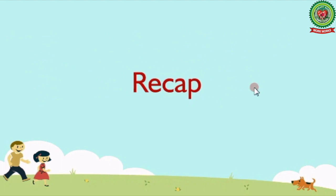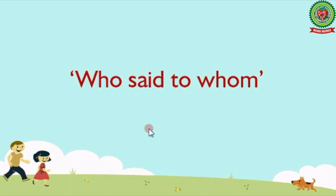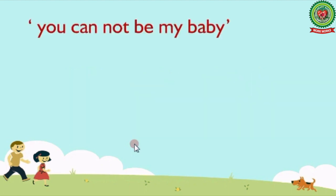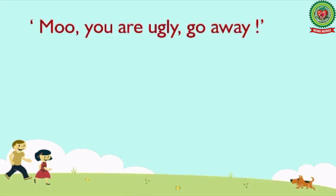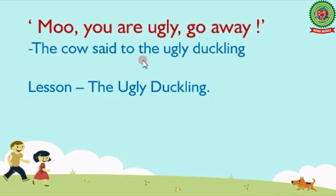Now let's have a quick recap of the lesson with a few exercises. Our first exercise is 'who said to whom'. You will be given few dialogues from the lesson and you have to tell who said these words to whom, and also mention the name of the lesson. First one: 'You cannot be my baby.' Answer: mother duck said to the ugly duckling. Second one: 'Moo! You are ugly, go away.' Answer: the cow said to the ugly duckling. Name of the lesson: The Ugly Duckling.